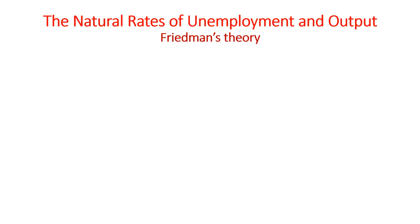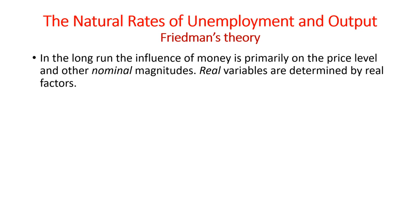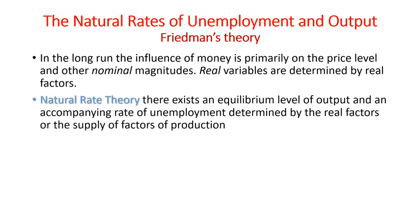According to Milton Friedman, the father of monetarist economists, in the long run, the influence of money is primarily on price level and other nominal variables, while real variables such as real output and employment level are determined by real factors. The Natural Rate of Unemployment and Output Theory by Milton Friedman says that there exists an equilibrium level of output and an accompanying rate of unemployment determined by real factors, or the supply-side factors of production. These factors include technology and institutions of the economy.